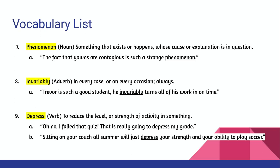Number seven is 'phenomenon,' a noun — something that exists or happens whose cause or explanation is in question. Number eight is 'invariably,' an adverb which describes a verb, adjective, or another adverb, meaning in every case or on every occasion; always. Number nine is 'depress,' a verb meaning to reduce the level or strength of activity in something.